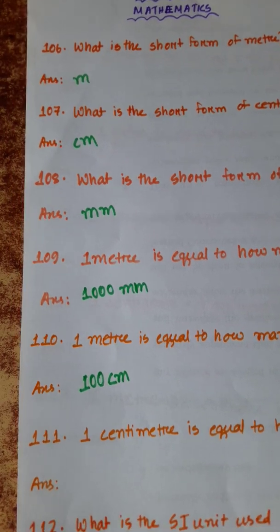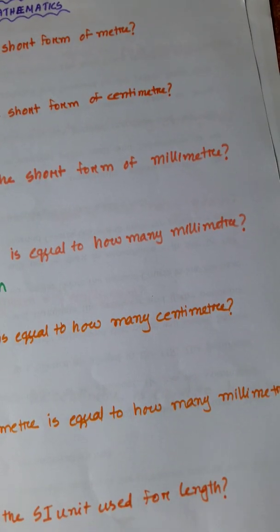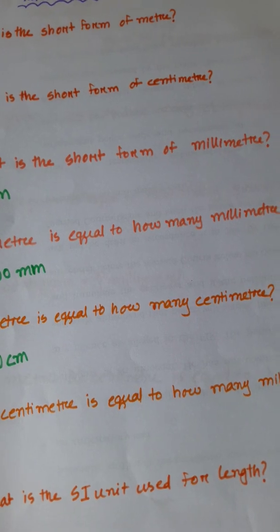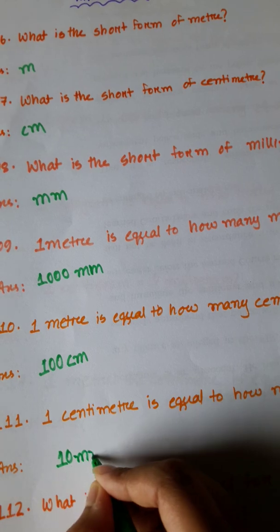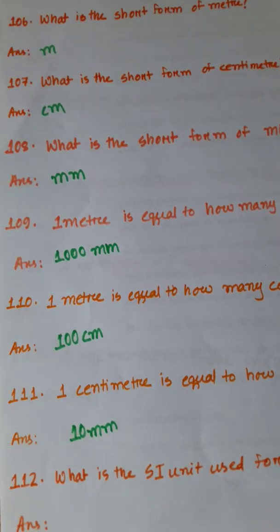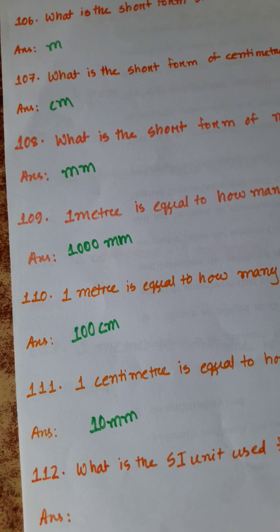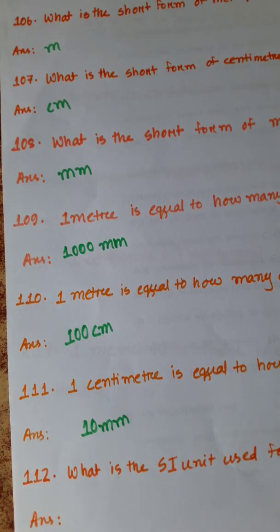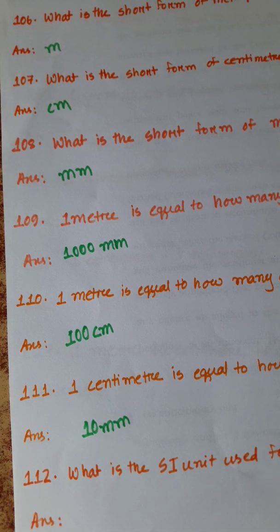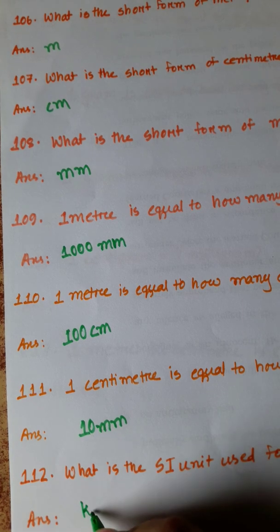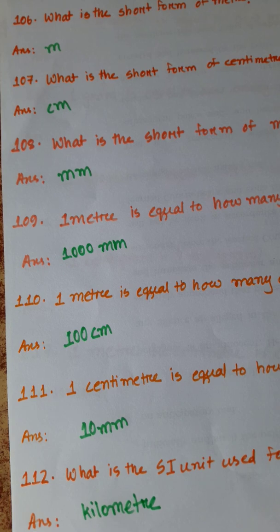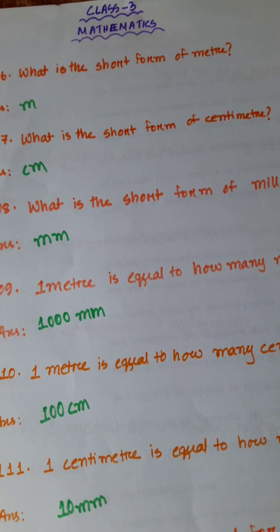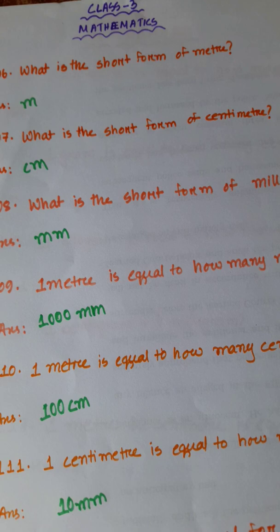Number 111: 1 centimeter is equal to how many millimeters? 1 centimeter is equal to 10 millimeters. Number 112: What is the SI unit for length? The SI unit for length, known worldwide, is kilometer. Kilometer is used for measuring long distances, while meter is used for shorter distances.